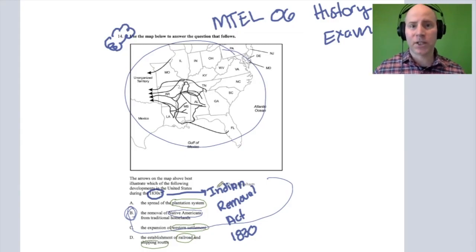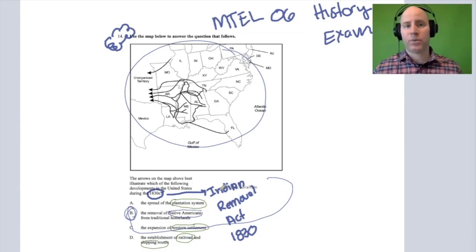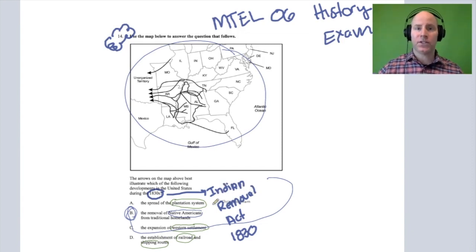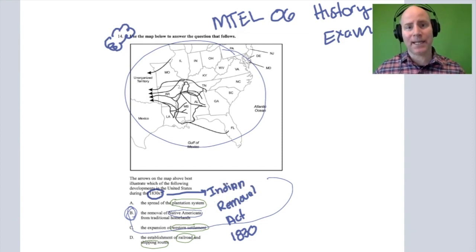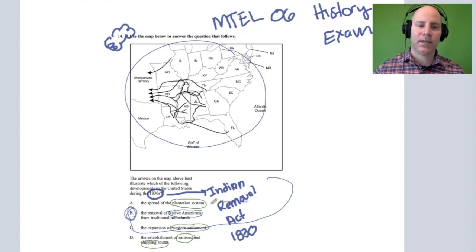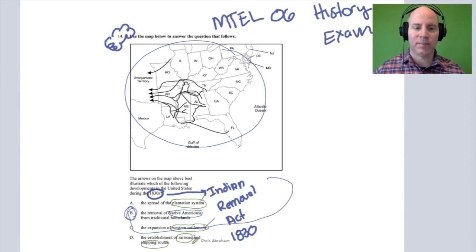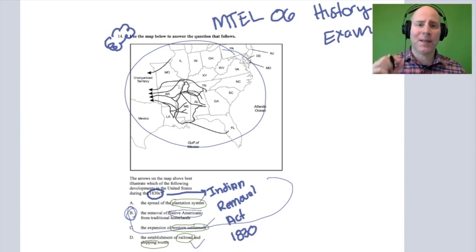This would definitely be, with a picture like this, a 30-second question — even less than that if you've done your studies. If you haven't studied the core vocabulary or academic ideas on your exam, you might look at a map like this and easily get confused with the Plantation System, Western Settlements, or the Railroad. So it's extremely important that you spend a little time on each one of those major ideas on your exam.